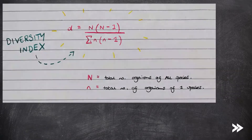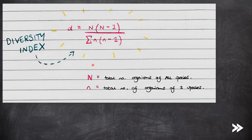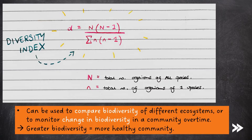The index of diversity puts a numerical figure to biodiversity. It can be calculated using this equation above. The capital N represents the total number of organisms of all species, and the lowercase n represents the total number of organisms of one species. The diversity index can be used to compare biodiversity of different ecosystems, or to monitor change in biodiversity in a community over time. The greater the biodiversity, the more healthy the community.